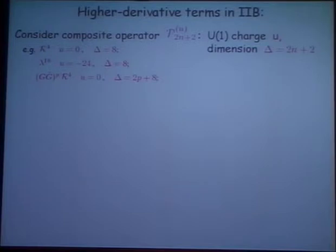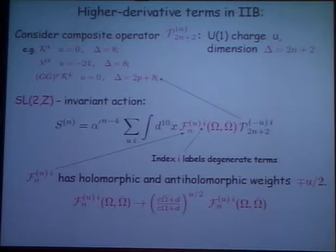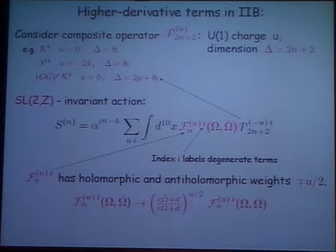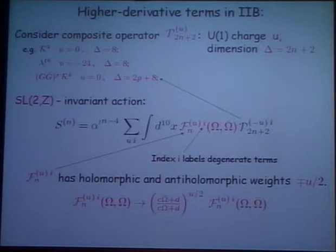Now, as I just said, the theory is invariant under this discrete SL(2,Z) duality symmetry, which means that when you write down a generic term in the action involving this combination P — since P carries a non-trivial U(1) charge, a generic SL(2,Z) transformation will transform P non-trivially — so that the coefficient function has to transform correspondingly in order to make the whole thing invariant. And so F has to be some sort of modular form. In the notation I'm using, it has to be a modular form which transforms with a phase determined by U, with equal and opposite holomorphic and anti-holomorphic weights.